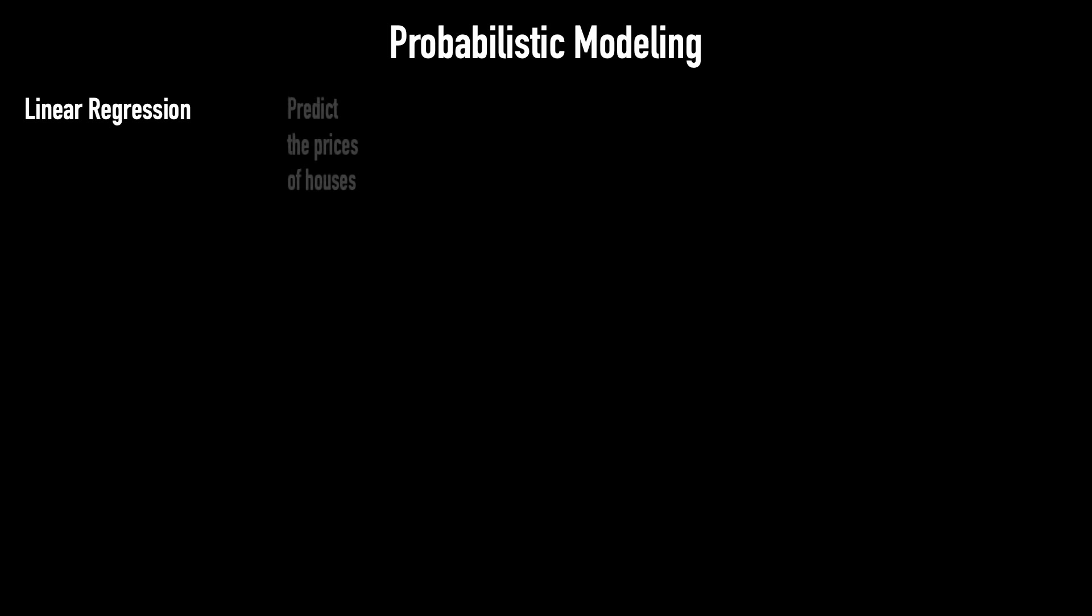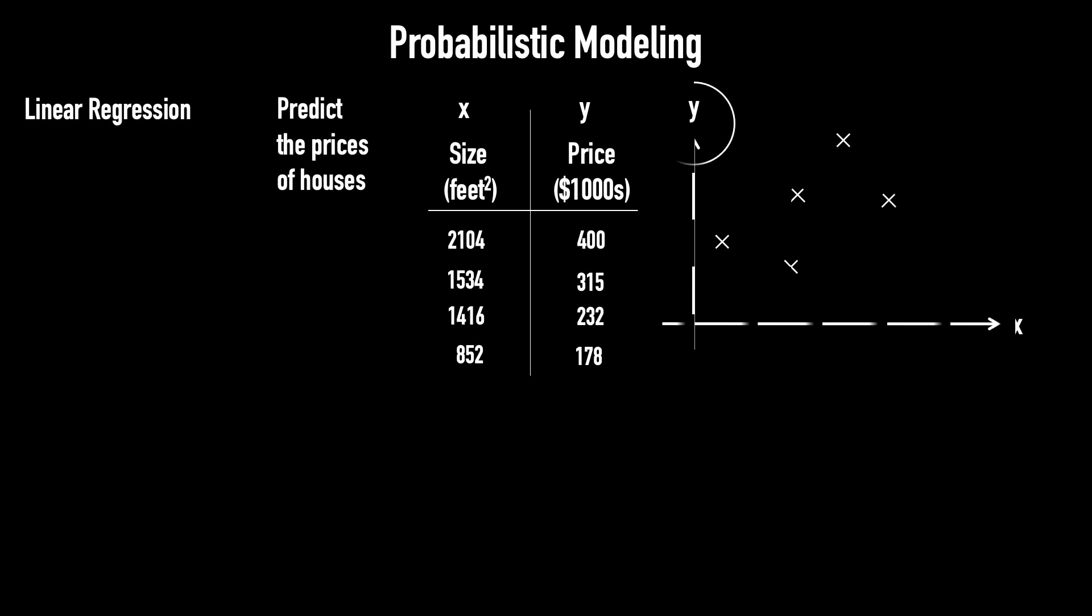In Lecture 2, to predict house prices, we looked at each example in the dataset and learned the relationship between the output y, the price, and the features x, the size. We then fit a straight line h of x to this data, written as h(x) = θ₀ + θ₁x.